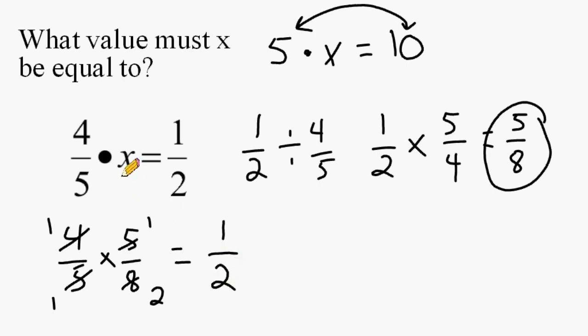So after substituting x with 5 eighths and multiplying it by 4 fifths, we do in fact come up with an answer of 1 half. So we can be very confident that our answer is correct.